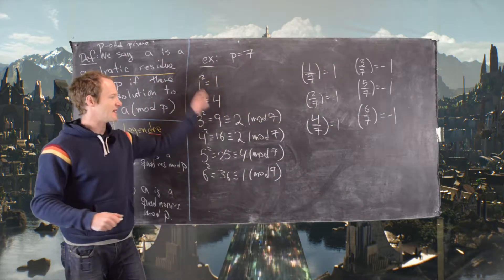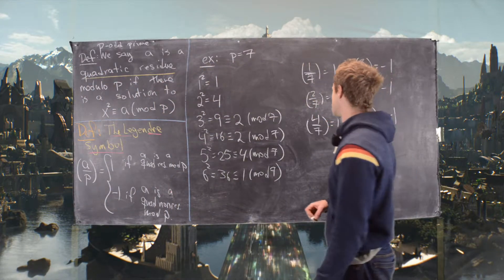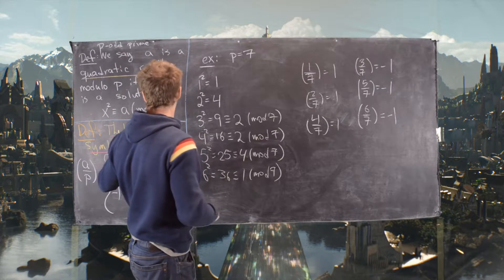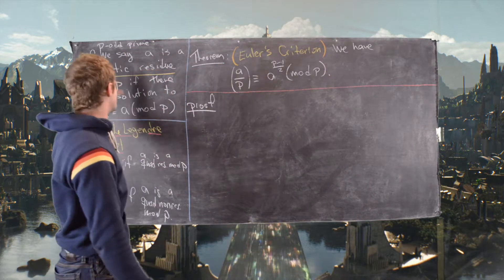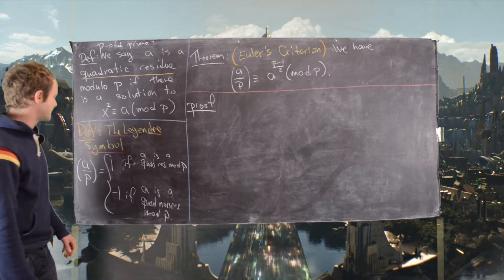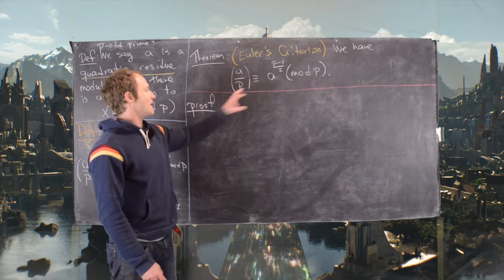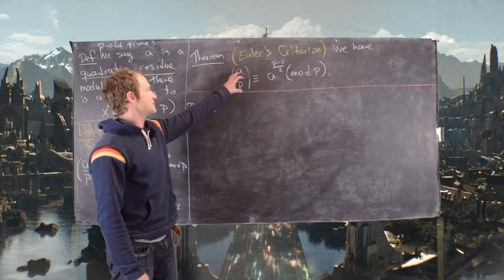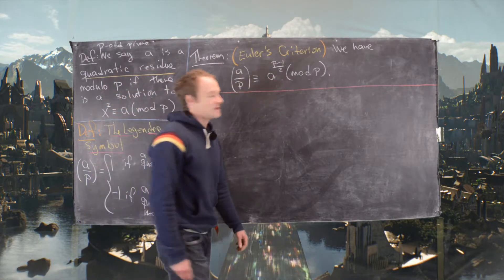We have a column of quadratic residues — perfect squares mod 7 — and a column of quadratic non-residues. Before ending this video, we'll look at one nice criterion for calculating whether something is a quadratic residue using the Legendre symbol: Euler's criterion. Euler's criterion states that for an odd prime p and an integer not divisible by p, (a/p) ≡ a^((p-1)/2) (mod p).